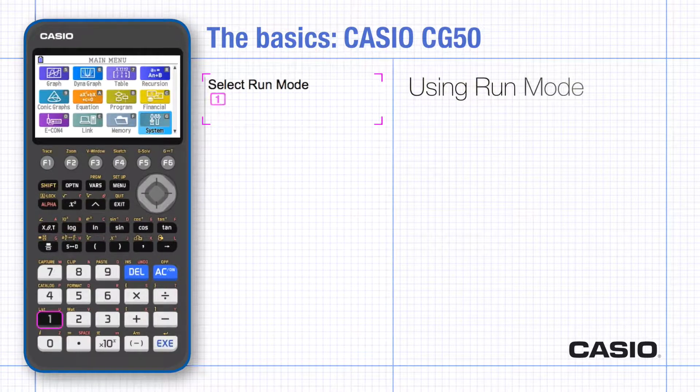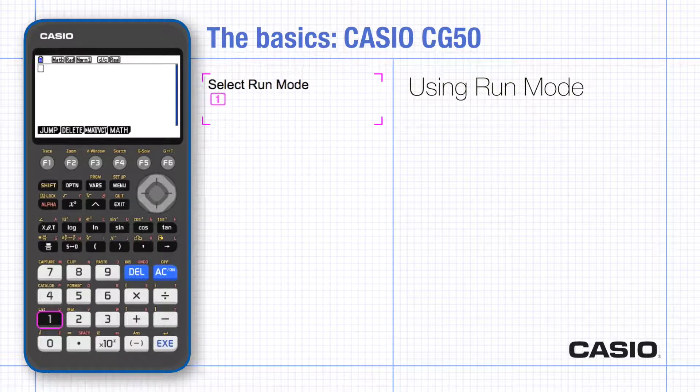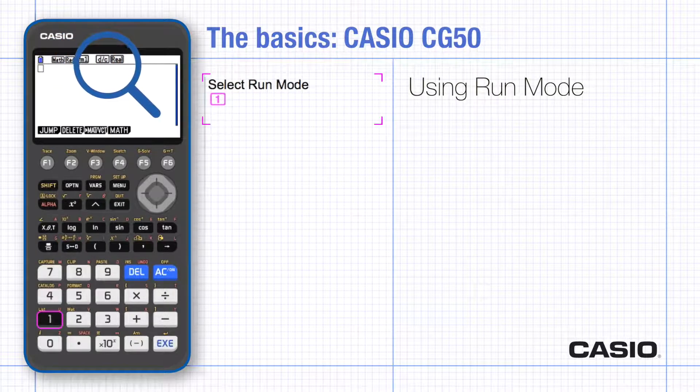Select run mode by pressing 1. This is where you will do all your calculations. It's very similar to a scientific calculator. The display across the top of the screen shows the default settings.